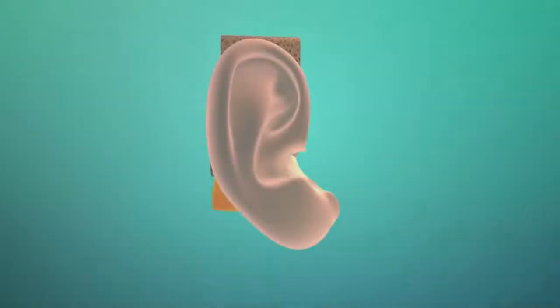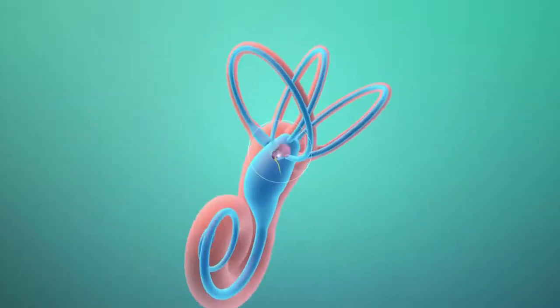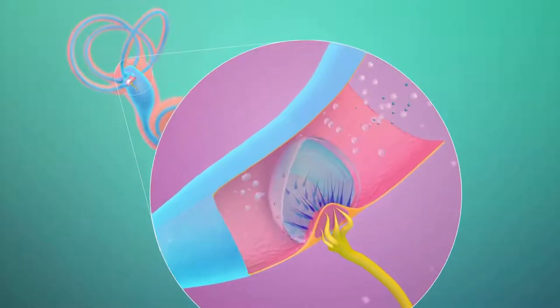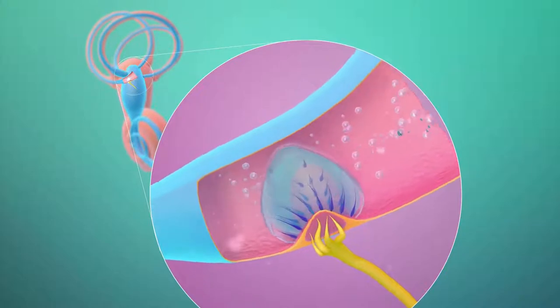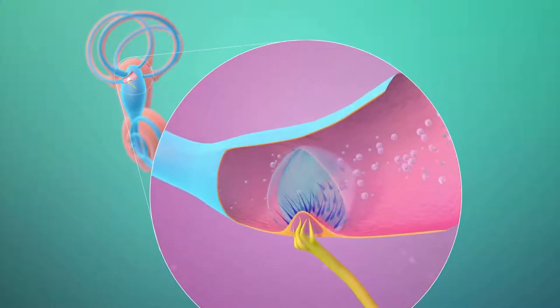Sounds received by the ear are transmitted by the auditory nerve and processed by the auditory sensory system, which includes the cochlear nuclei, the superior olivary complex, the inferior colliculus, the medial geniculate nucleus, and the auditory cortex. To simplify this process, let's go through the different steps of hearing and the different parts involved. Sound processing follows the steps outlined below.